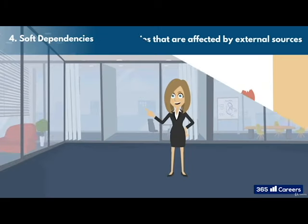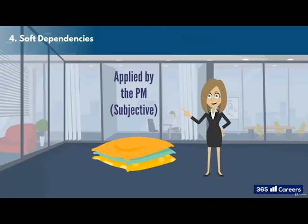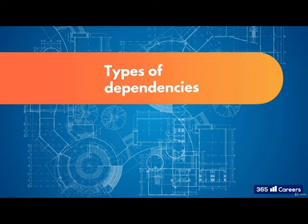The fourth are called soft dependencies. These are applied by the project manager themselves, and could include things like a task not going forward, unless the project manager has checked the previous task. They are called soft dependencies as they are easily amendable, due to the fact that the project manager set them in the first place. Now, let's have a look at the types of dependencies. Four, again, is the magic number here.